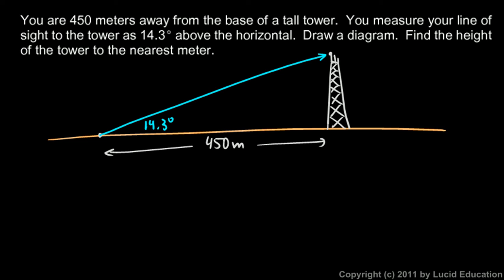We're told to find the height of the tower to the nearest meter. So let's call the height h. We can say that the tangent of 14.3 degrees will be h over 450 meters, because tangent is opposite, which will be the height, over adjacent, which we know is 450 meters.